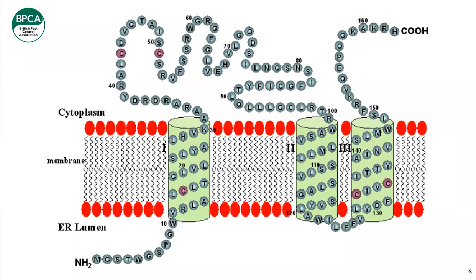The VKORC1 enzyme is basically a string of 163 amino acid beads. Where there is a green section in the diagram, that's the redox center where it has an effect — in our case on the vitamin K cycle. Each bead is an amino acid given a letter. For example, the Hampshire strain mutation occurred at position 120, where leucine is the amino acid — and each amino acid has a corresponding name and abbreviation letter.